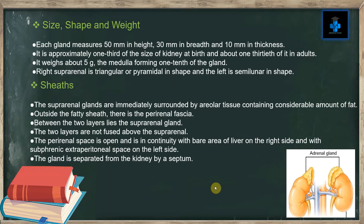Size, shape, and weight: Each gland measures 50 millimeters in height, 30 millimeters in breadth, and 10 millimeters in thickness. It is approximately one-third the size of the kidney at birth and about 1/30 of it in adults. It weighs about 5 grams, with the medulla forming one-tenth of the gland. The right suprarenal is triangular or pyramidal in shape.